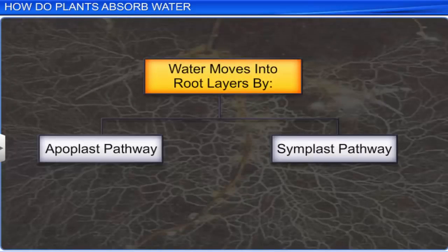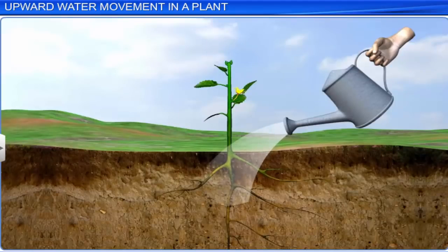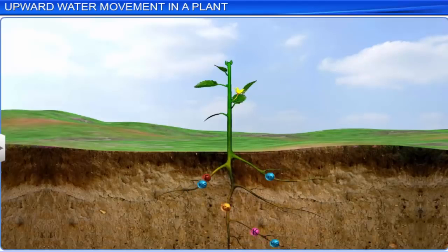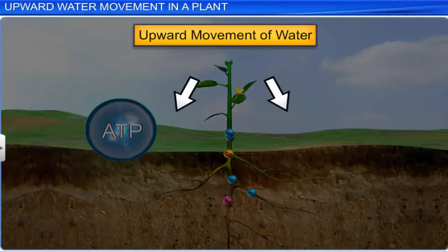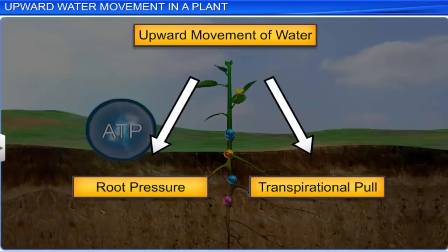However, irrespective of how water is absorbed, water moves deeper into the root layers through two pathways: apoplast and symplast. When plant roots absorb water and minerals from the soil, they move it in an upward direction to reach different parts of the plant. Have you ever wondered how this upward movement of water and minerals takes place? This is made possible by a combination of root pressure and transpirational pull.